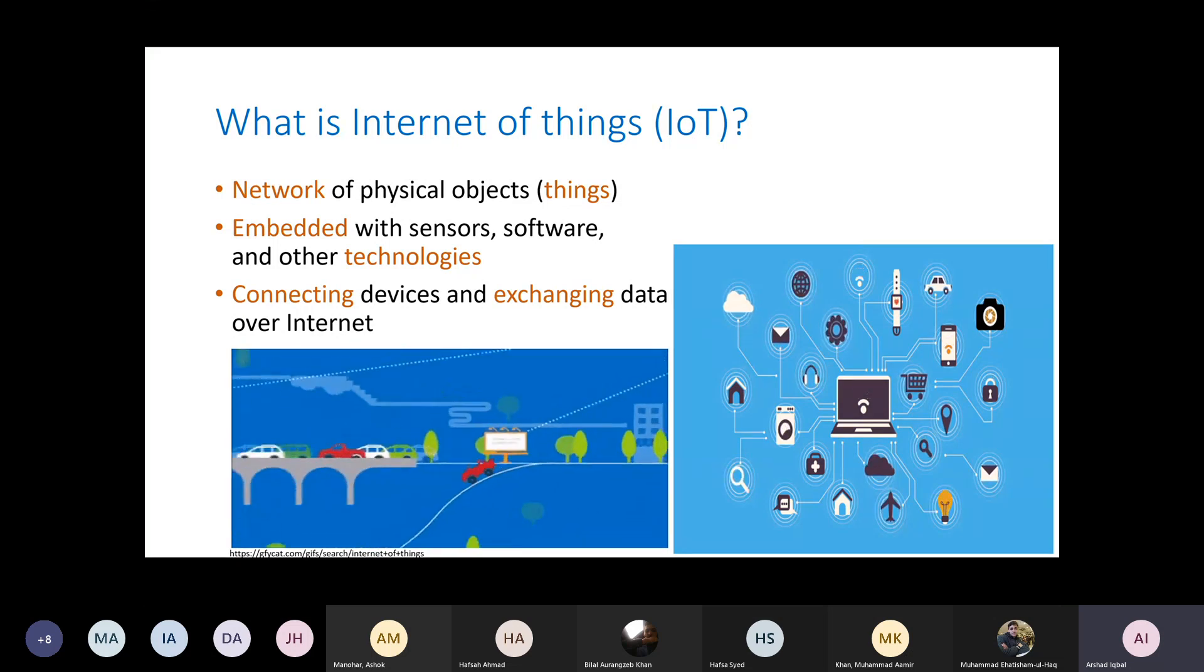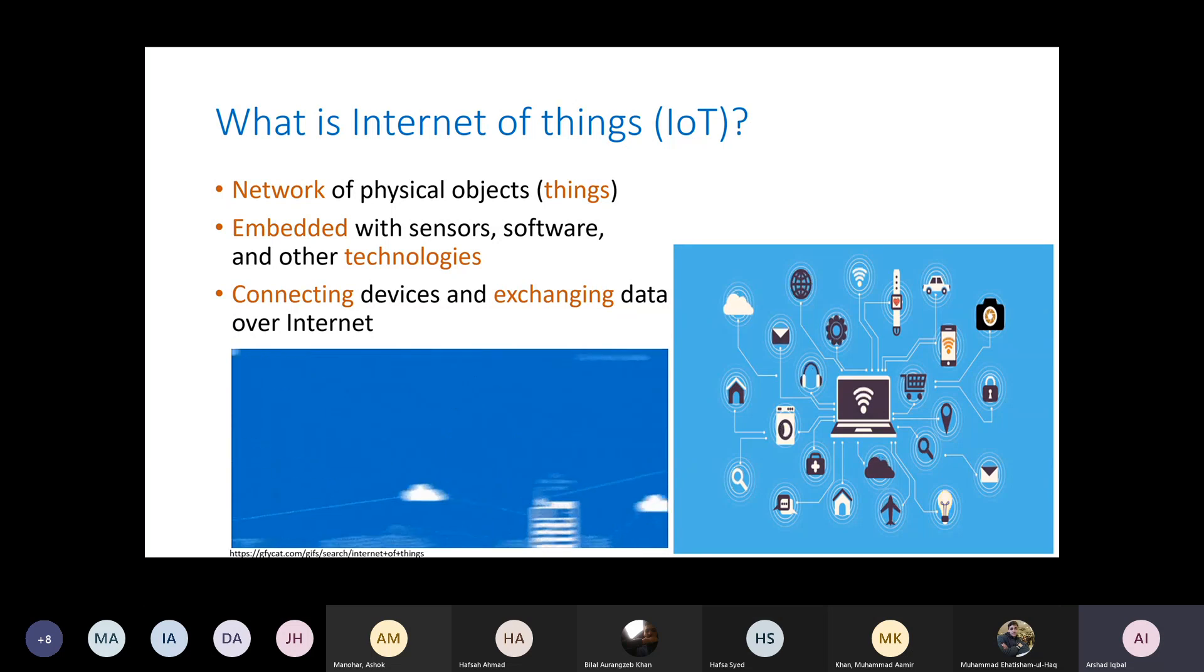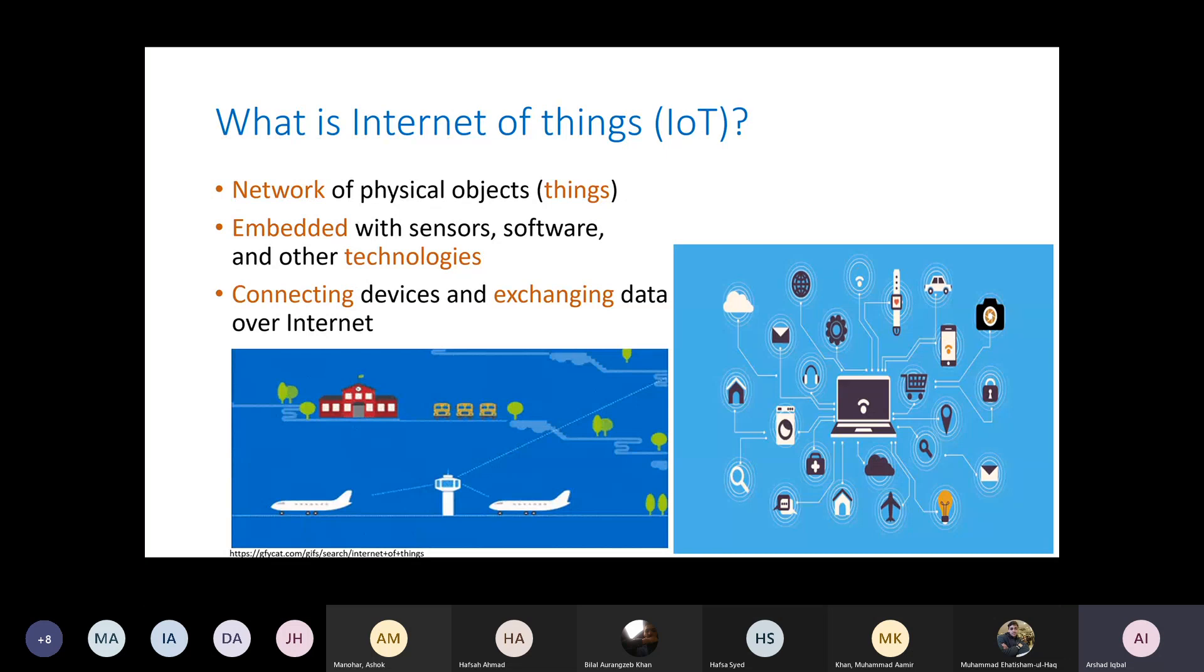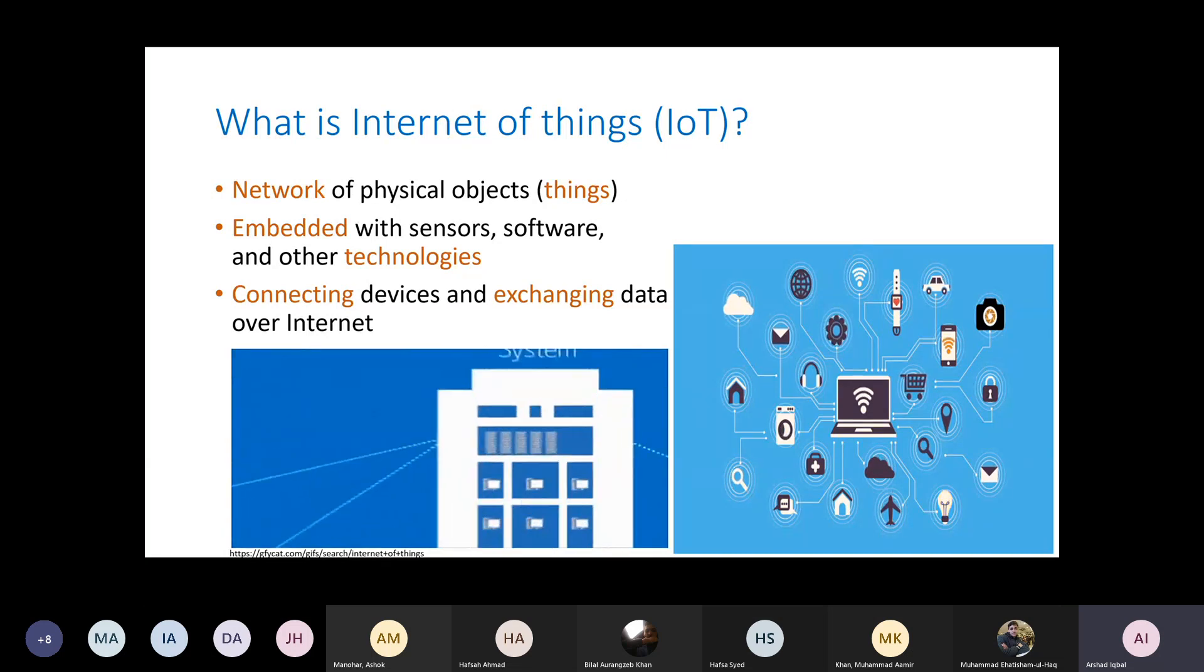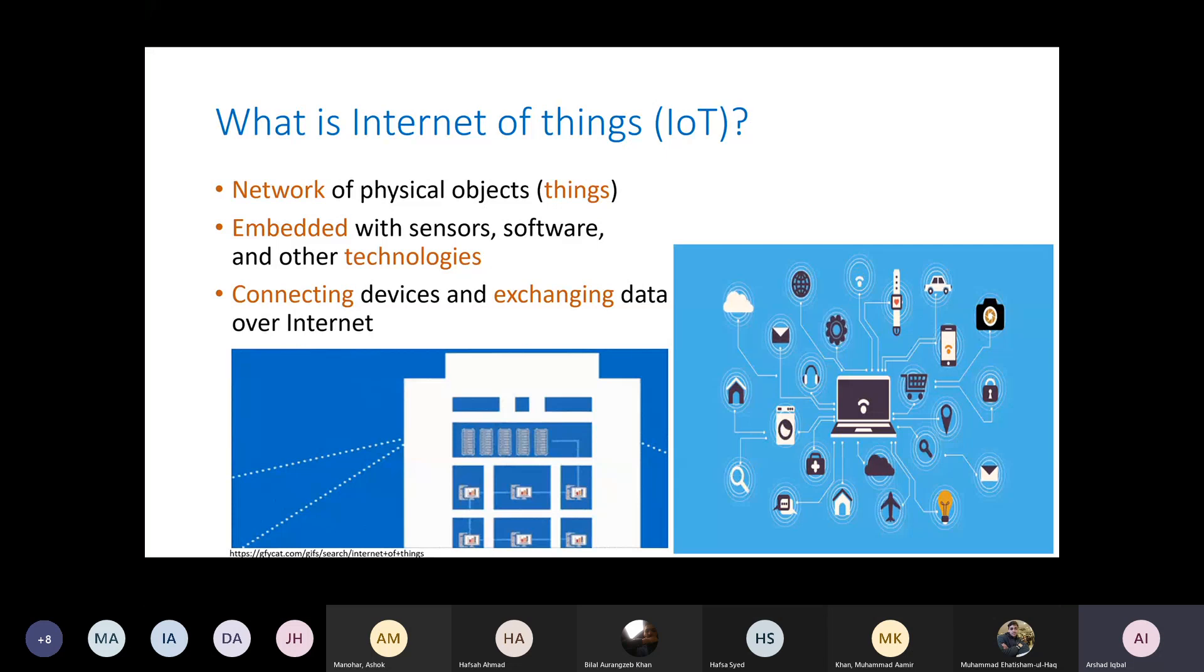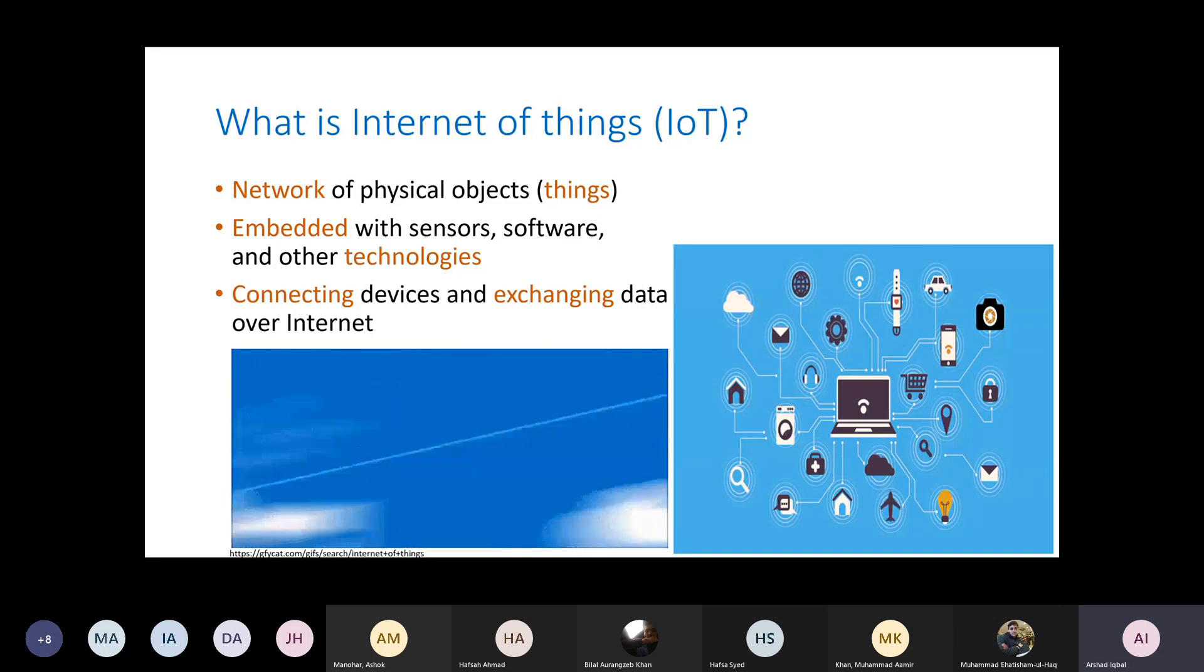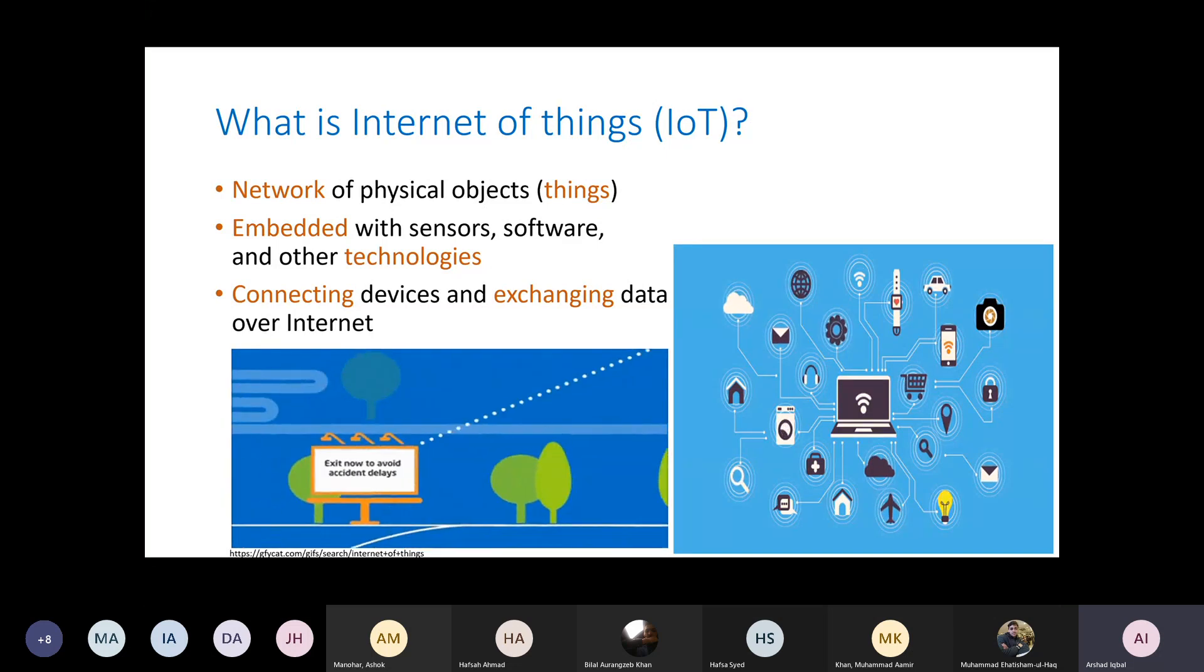If you could see on the right of the screen, there is a graphic which shows Internet of Things. There are multiple devices connected to the Internet, which contains smartphones, a washing machine, healthcare, a mobile phone, home, and other nodes or devices.